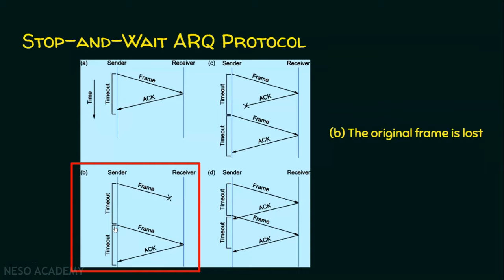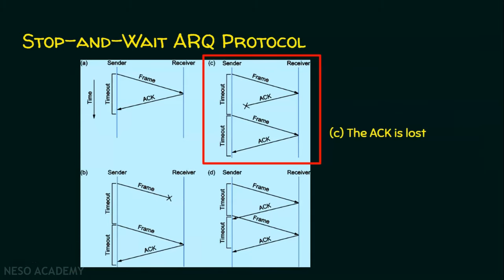Scenario C is the situation where the acknowledgement is lost. The sender has sent a frame and the receiver has sent an acknowledgement, but this acknowledgement is lost and the timer runs out. The sender did not receive the acknowledgement before the timeout, so it retransmits the frame again — because the sender assumes that either the frame or the acknowledgement was lost. After retransmission, the acknowledgement is received before the timeout expires. In scenario C also, the retransmission is automatic.